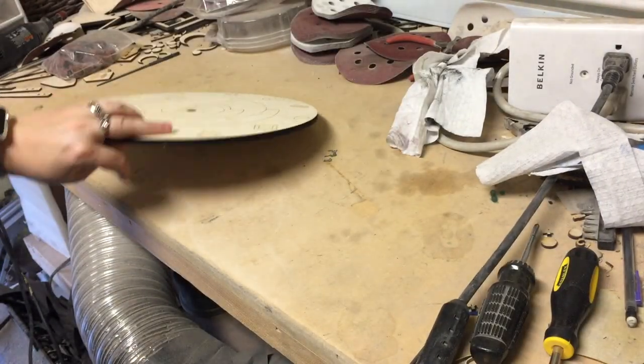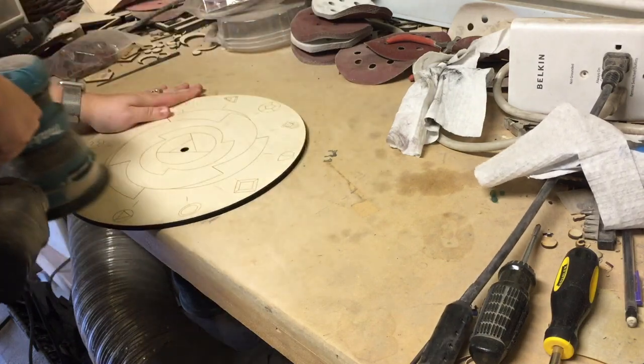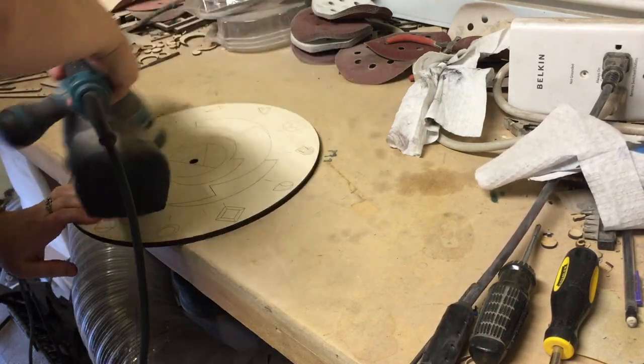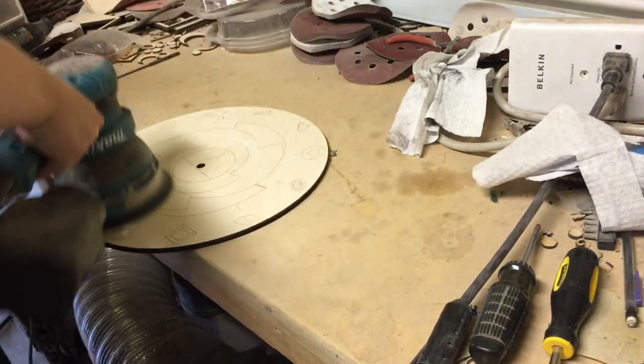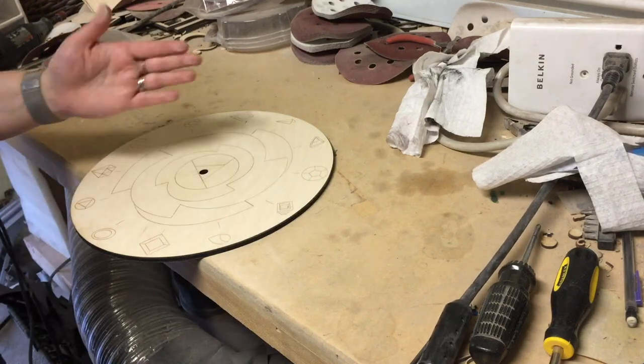Fresh out of the laser, time to sand it. This base piece is going to be left as plain wood and polyurethane so it's especially important that its surface is nice and smooth.